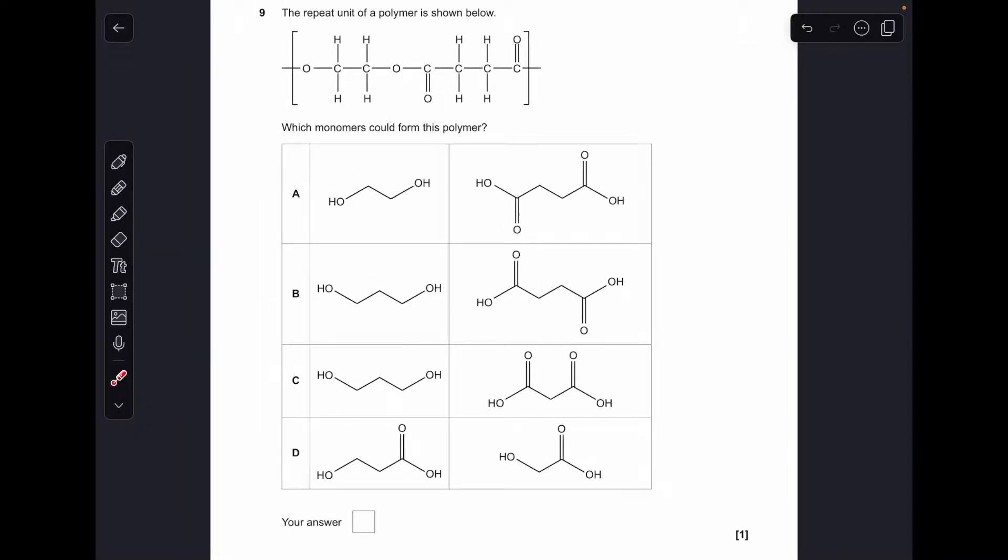Question nine, if we want to find out the monomers to make this polyester, we just cut the ester bond. This is going to become a di alcohol and this is going to become a di carboxylic acid. You can see straight away that this diol here is that one there, so A was the answer.